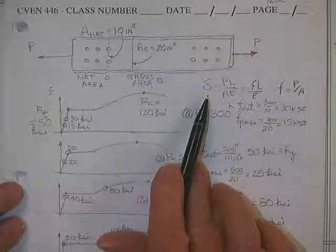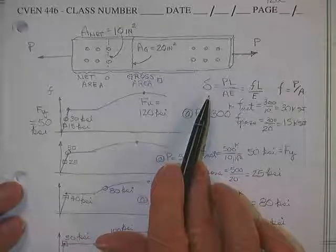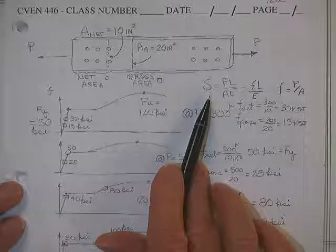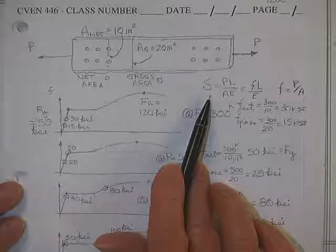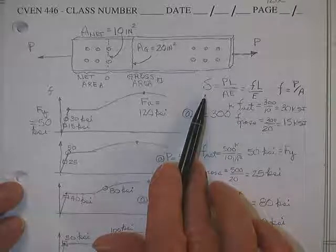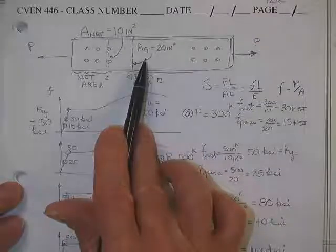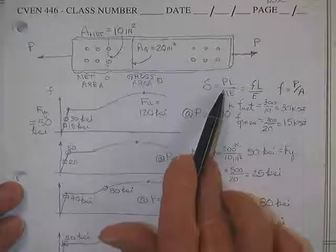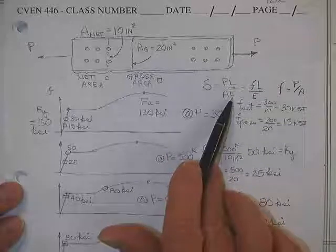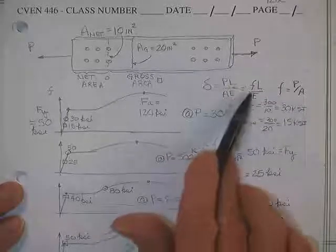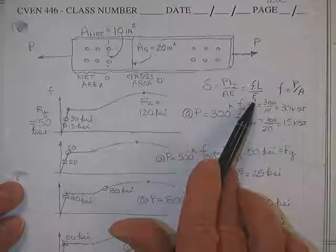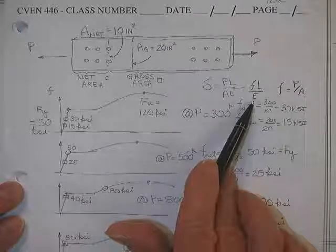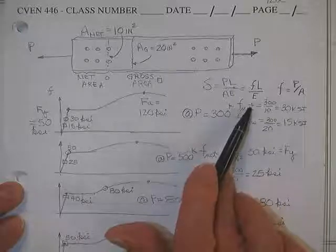This is called the net area across here in this region. This is called the gross area across here. Remember that equation? Where did it come from? 305. Only until you got into 305 did you learn how much deformation you get in a member. If deformation is a critical thing we have to watch for, then we're basically talking about P L over A E.